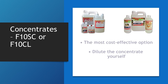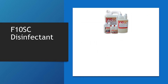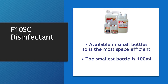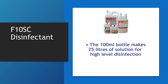The most cost-effective method is to buy a concentrate — either the F10SC or F10CL — and dilute it yourself. The F10SC is the most concentrated, producing more disinfecting solution per millilitre, and is available in small bottles making it the most space-efficient option. The smallest bottle is only 100 millilitres, but at the dilution recommended for high-level disinfection it will still produce 25 litres of solution.